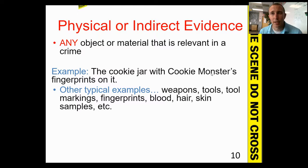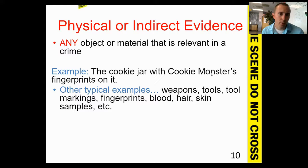Physical or indirect evidence will be the vast majority of what we talk about this semester. This includes things like blood spatter, tool marks, fingerprints, skin or other types of cells, and other bodily fluids that might contain DNA. These are all examples of physical evidence, meaning there's no opinion being shared and no inference required — it's just what the evidence is.